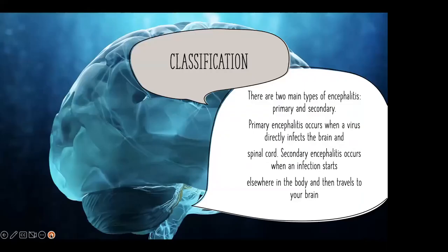There are two main types of encephalitis: primary and secondary. Primary encephalitis occurs when a virus directly infects the brain and spinal cord. Secondary encephalitis occurs when an infection starts elsewhere in the body and then travels to the brain.